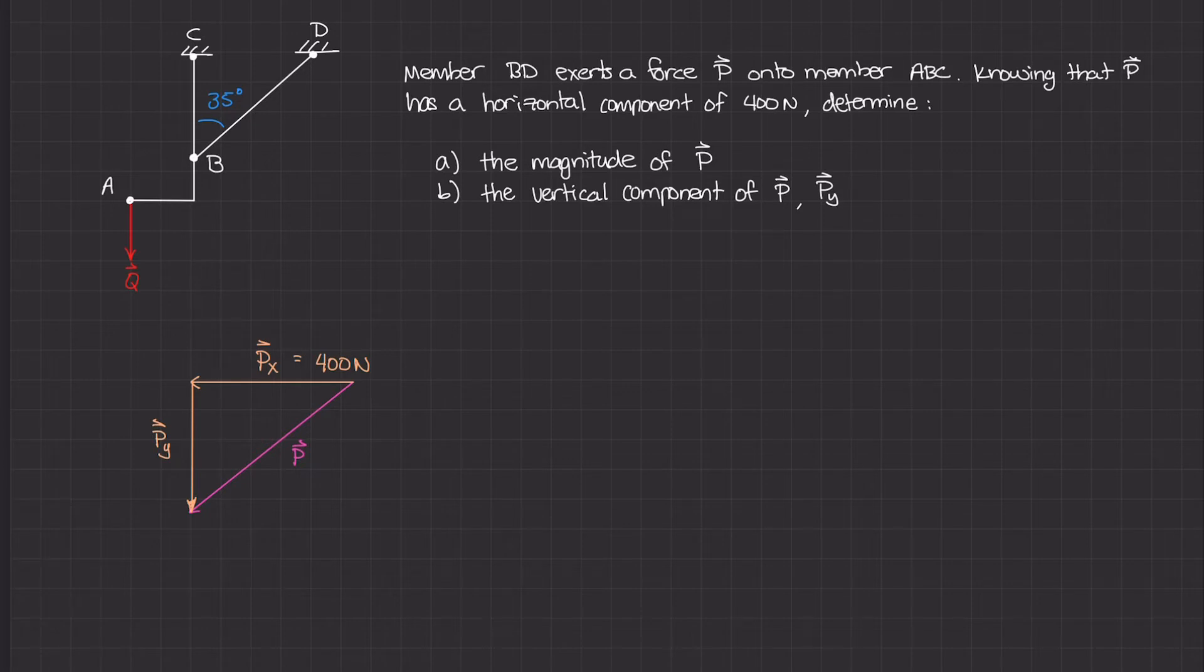We want to complete this diagram by adding in some angles. We know that BD acts at a 35 degree angle from the vertical line. So this angle is 35 degrees. This makes a right triangle with hypotenuse P and sides Px and Py.